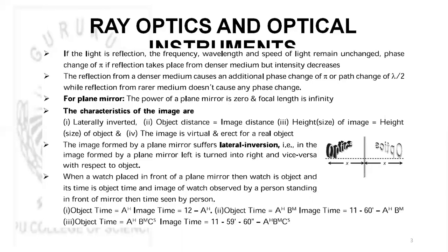In a plane mirror, the image will be laterally inverted, object distance will be equal to image distance, and the height or size of image will be equal to the size of the object. If a watch is kept in front of a mirror, the actual time in the watch will be equal to 11 hours 60 minutes minus the time observed in the image of the watch.